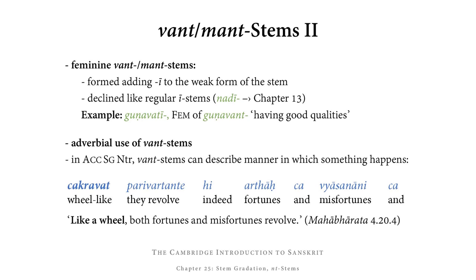Parivartante hi arthāś ca vyasanāni ca — 'Like a wheel, the fortunes and misfortunes (arthāś ca vyasanāni ca) revolve (parivartante)' — which is a quote from the Mahabharata.